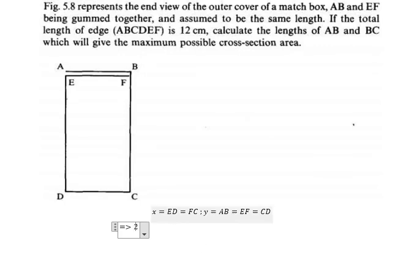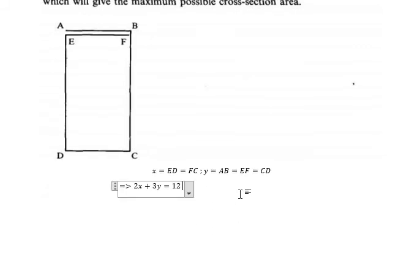We have 2x plus 3y equal to 12, because we have two units of x and three units of y. When we sum these together they equal 12 centimeters.